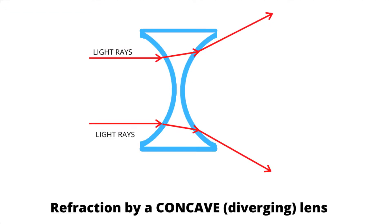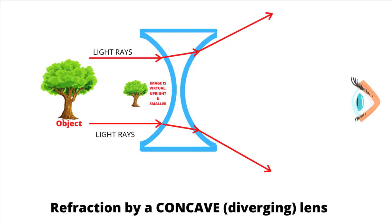A concave lens is thicker at the edges than it is in the middle. This causes rays of light to diverge or spread out. The light forms a virtual image that is right side up and smaller than the object.